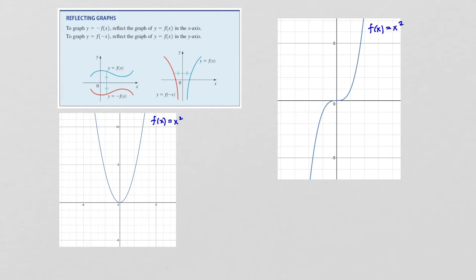The next concept we're going to look at is reflecting graphs. If you know the graph of some function f(x) and you want to graph -f(x), that is just going to be a reflection of the graph of f(x) over the x-axis. So if this is what f(x) looks like, -f(x) gets reflected across the x-axis and will be a mirror image of f(x) on the other side.